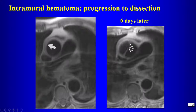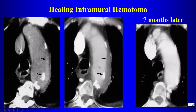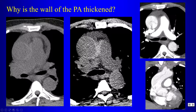Here is an example of a healing intramural hematoma that is completely healed seven months later. In another patient with dissection, on non-contrast CT there is hematoma in the wall of the aorta.